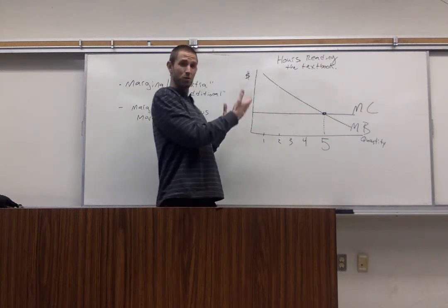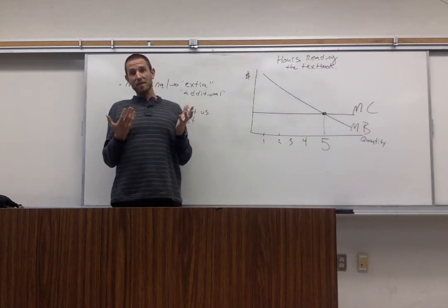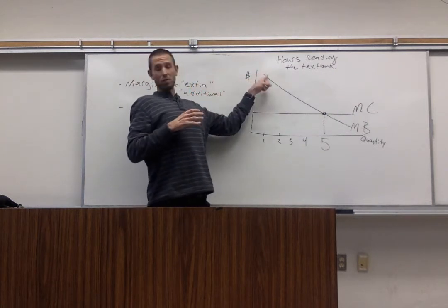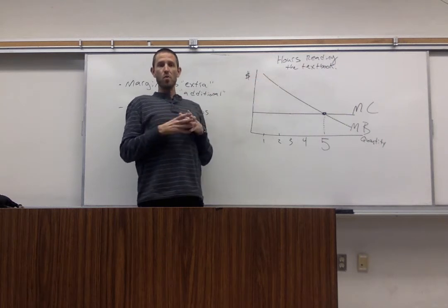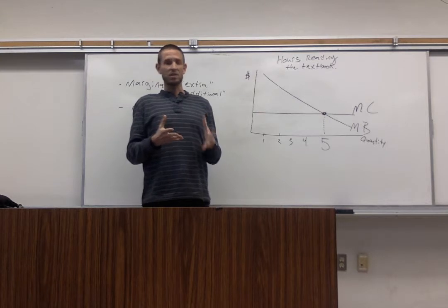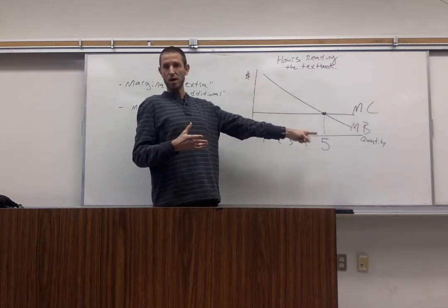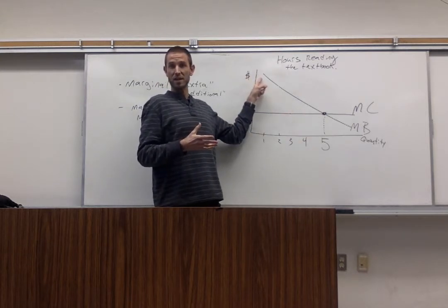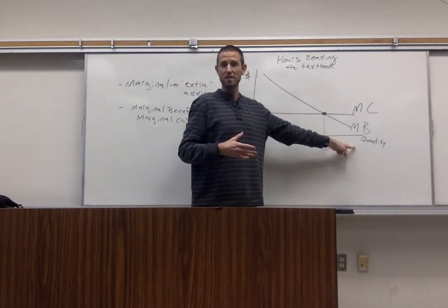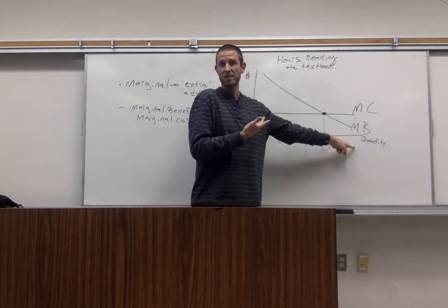As you can see, reading the textbook, and with a lot of things in fact, the marginal benefit of an activity starts out relatively high, and then as you do more and more of it, the marginal benefit starts to wane, it starts to get small. That's just what we're modeling here. You get a lot from reading at first. If you read for a whole bunch, the extra benefit that you get starts to get small.